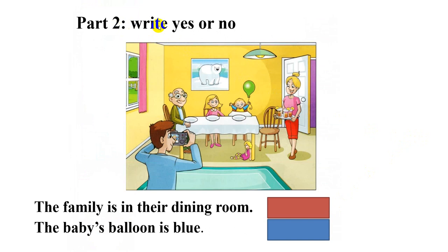Part 2. Write yes or no. This is a picture about a family and you read the sentences and write yes or no. Number 1. The family is in their dining room. Yes or no? Yes. The baby's balloon is blue. Look at the baby's balloon. What color is this? Is it blue? No. So you write no. Okay.